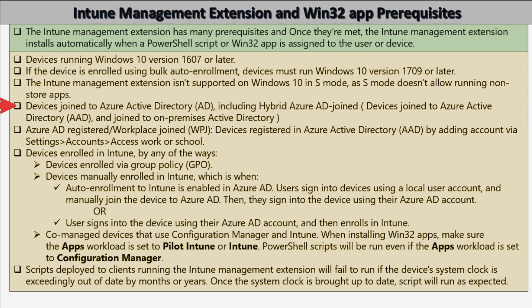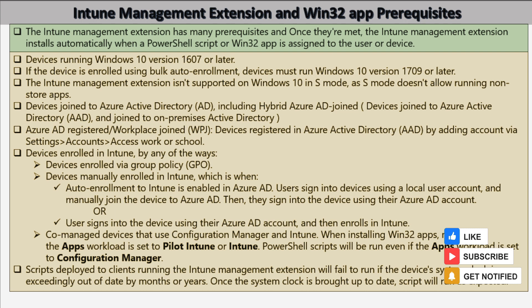The device must be joined to Azure Active Directory, including hybrid Azure AD — meaning joined to both Azure AD and on-premises Active Directory. For Azure AD registered or workplace-joined devices, the device must be registered in Azure AD by adding accounts via Settings > Accounts > Access work or school. The device must also be enrolled in Intune via Group Policy Object, manual enrollment when auto-enrollment is enabled in Azure AD, or by the user signing in with an Azure AD account and then enrolling in Intune.